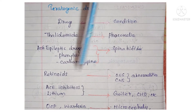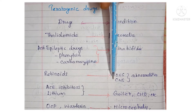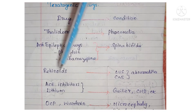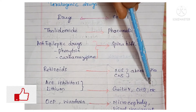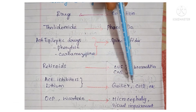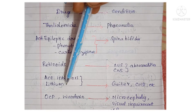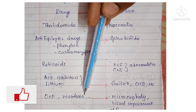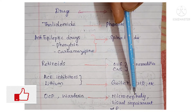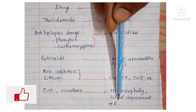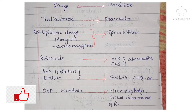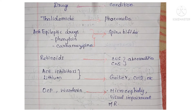Next is retinoids, which cause cardiovascular system as well as central nervous system abnormalities. ACE inhibitors and lithium can lead to goiter and congenital heart diseases. Oral contraceptive pills and warfarin can lead to microcephaly — that is a small head — visual impairment, and mental retardation. Drugs like tetracycline can lead to tooth abnormalities in children.